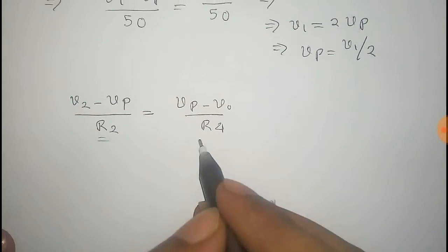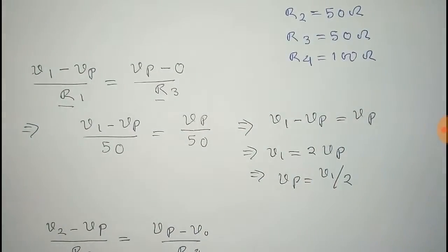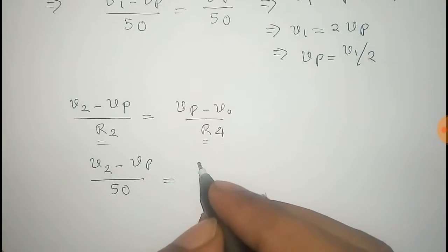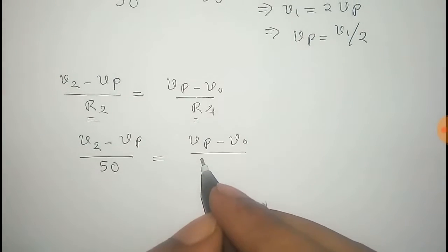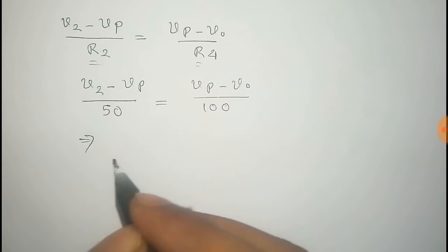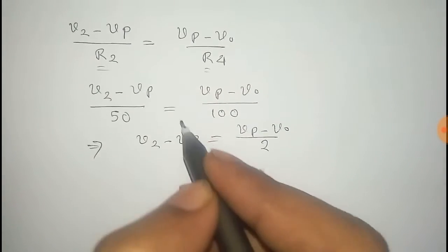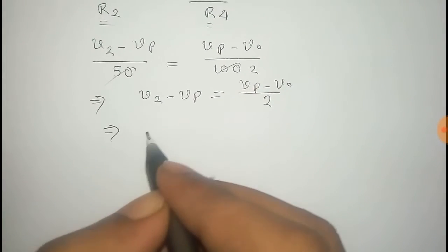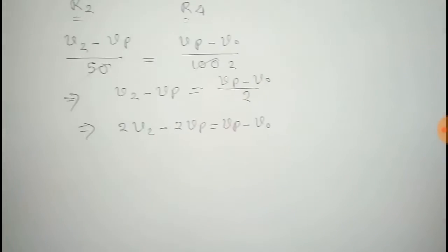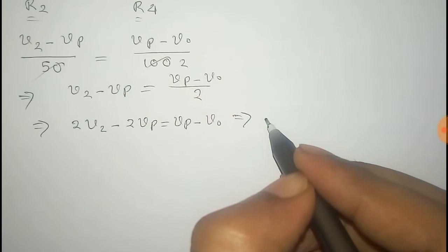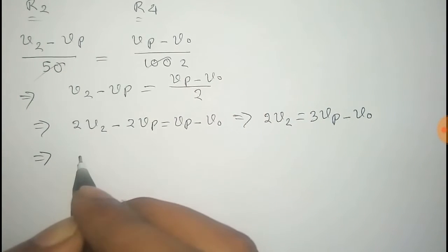Substituting R2 = 50 Ohm and R4 = 100 Ohm: (V2 - Vp) / 50 = (Vp - V0) / 100. Simplifying by multiplying through: 2(V2 - Vp) = Vp - V0, which gives 2·V2 - 2·Vp = Vp - V0.